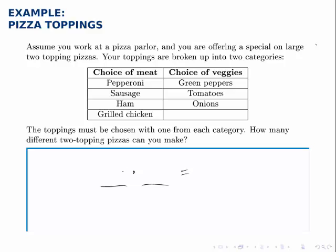There are four options for meat and three options for veggies. Multiplying the two together, we get twelve total options for how you can make this two-topping pizza using this restriction.